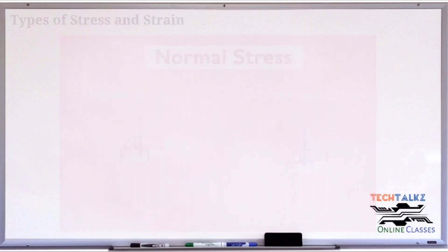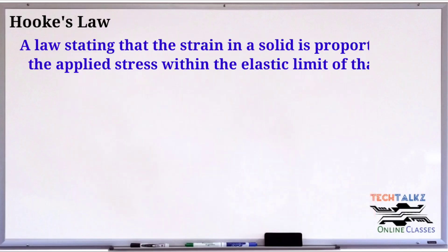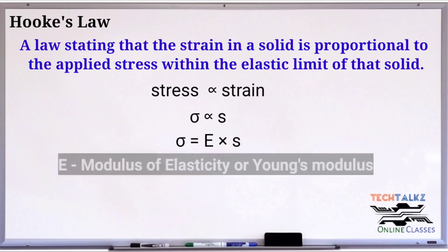The stress and strain are closely related. Under small deformation, the stress and strain are proportional to each other. This is called Hooke's law. Based on this law, sigma is proportional to S, where sigma is stress and S is strain. Or sigma equals capital E times S. The proportionality constant capital E is called modulus of elasticity.